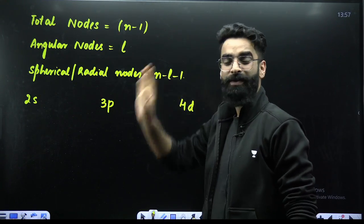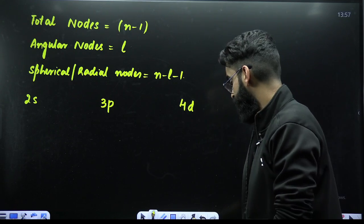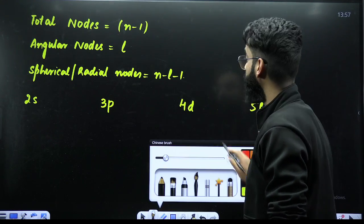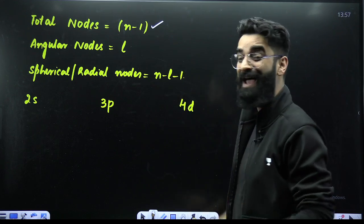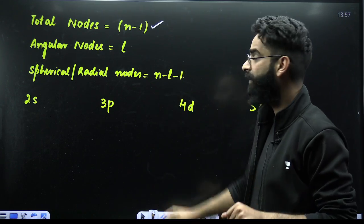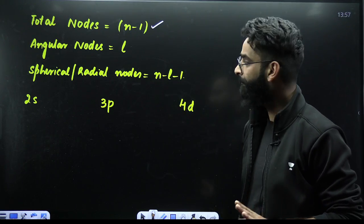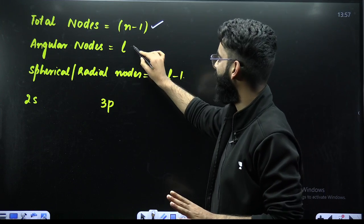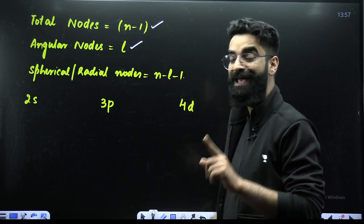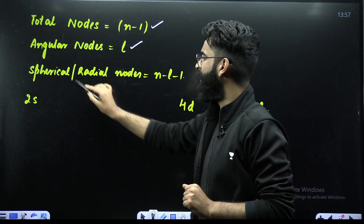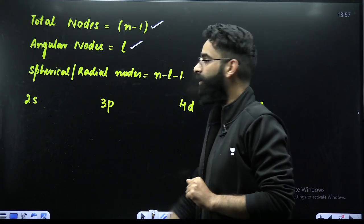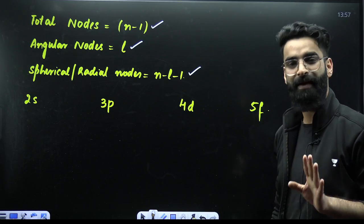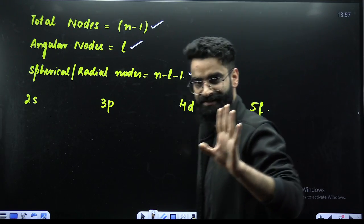In order to calculate the total number of nodes, you have one formula. Total number of nodes = N − 1, where N is the principal quantum number. To calculate angular nodes, the value is L, where L is the azimuthal quantum number. To calculate spherical or radial nodes, the formula is N − L − 1. Short questions are asked on this.